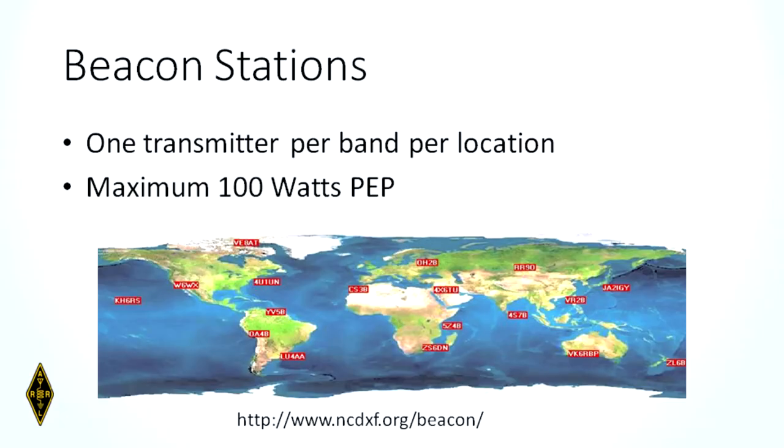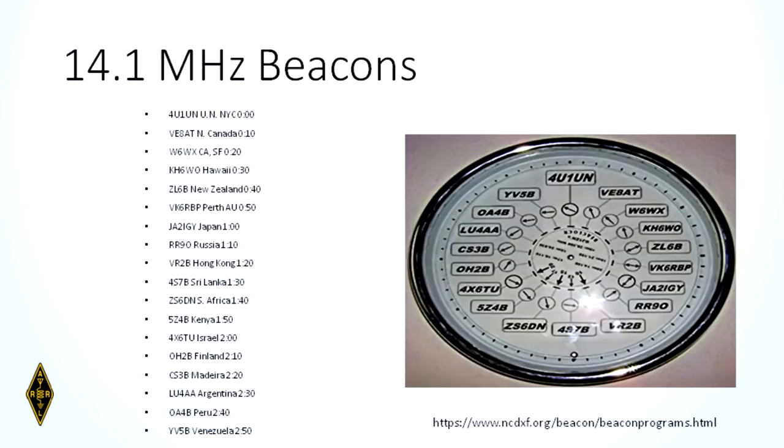Dealing with propagation, there are stations set up around the world called beacon stations. They send in Morse code at particular times of the day at particular power levels. If you know when they're going to be on, you can listen for them — and if you can hear them, you have an idea that propagation is open to that particular area. It's divided by the clock — someone's marked up a clock as to when certain stations are going to be on the air, all around the world.